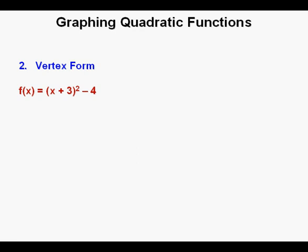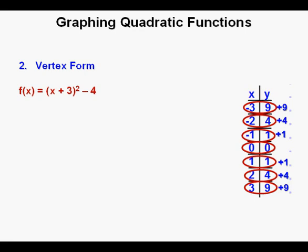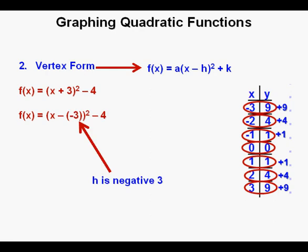Now we'll move on to graphing using the vertex form of a quadratic function. This method is quite a bit easier to graph, especially compared to standard form. We'll employ the same pattern of quadratic functions used earlier, starting from the vertex and going up a certain number of units based on position from the vertex. The vertex formula is a times quantity x minus h squared plus k. We rewrite the function in this form, and the trickiest part is remembering the formula uses x minus h.